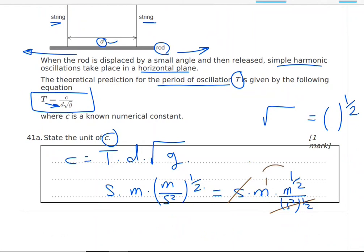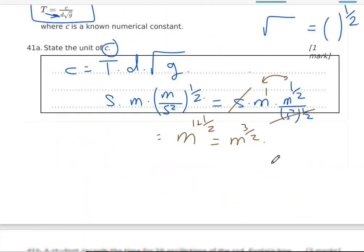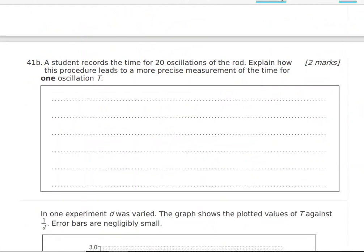Same base, we add the power. So it will be M to the power one plus half. And this will equal M to the power three over two. So the unit of C is meter to the power three over two.